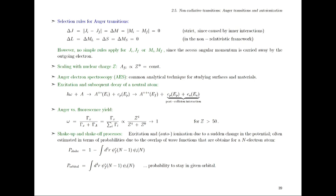Just as in photoionization, we can also have shake processes associated with autoionization. Due to the de-excitation, you will not only release the second electron into the continuum but can also excite or ionize a third electron — a shake-up or shake-off process associated with the Auger decay. This leads to quite considerable complexity, which is the focus of our present work and in particular of Randolph's work, who will help this afternoon.